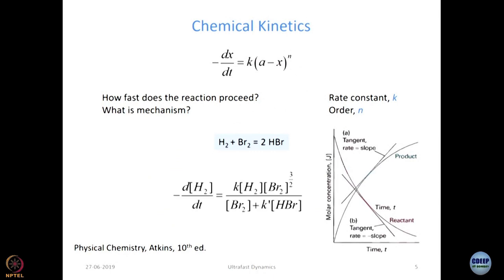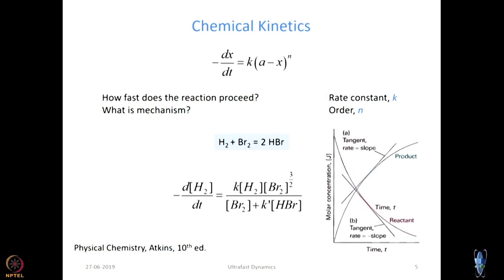Consider H₂ + Br₂ → 2HBr. It looks straightforward — you might think the rate is k[H₂][Br₂] — but actually the rate law is quite complicated. That is because the reaction is not just H₂ and Br₂ coming together and colliding; it is a free radical reaction. When you propose the correct mechanism, you arrive at the observed complex rate law.